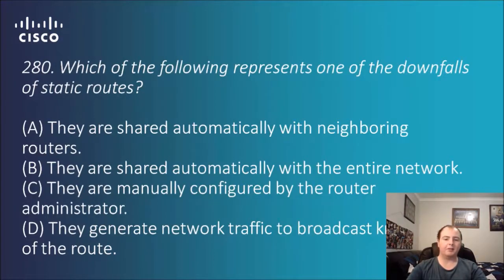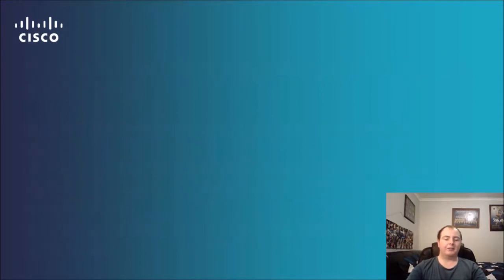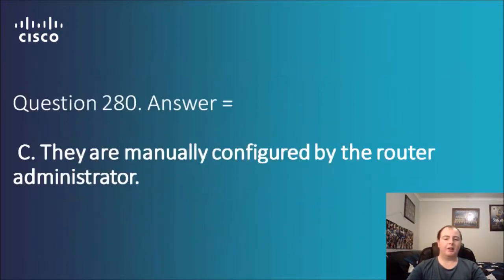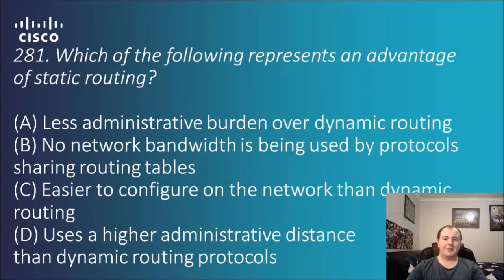Question 280: which of the following represents one of the downfalls of static routes? Options: they are shared automatically with the entire network; they are manually configured by the router administrator; they generate network traffic to broadcast knowledge of the route. Static generally means it needs to be configured, so that gives you a big hint. The answer is C — they are manually configured by the router administrator, meaning someone has to physically type in those commands.